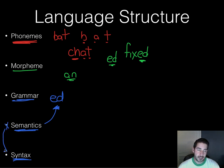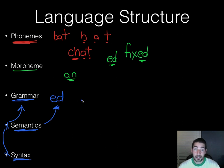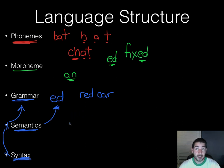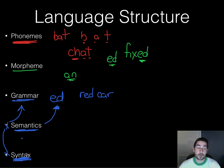Syntax is the rules for how we put things together. In English, we put the adjective before the noun — so we say 'the red car.' In Spanish, it's the opposite; you would say 'carro rojo.' So syntax rules differ between languages, and the same goes for semantics — the rules vary depending on which language you're talking about.